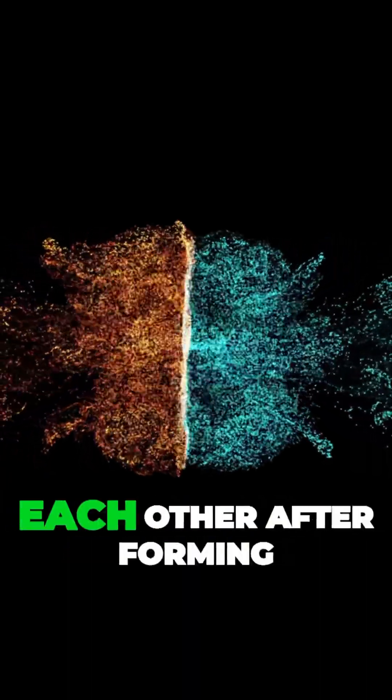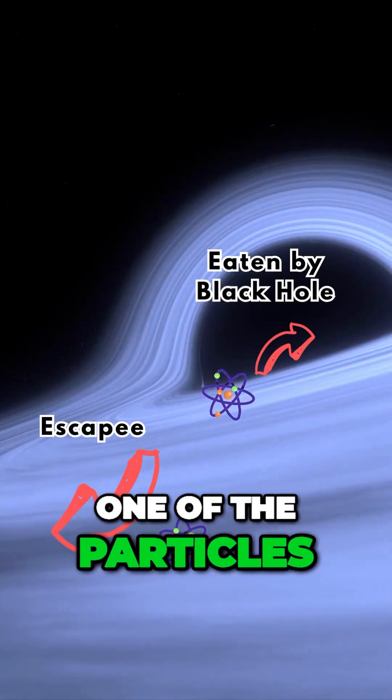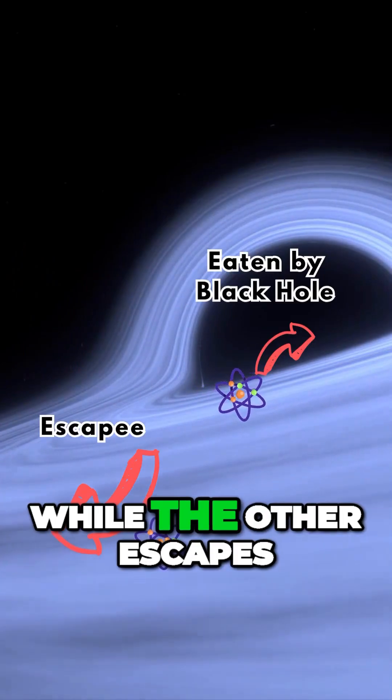Normally, these pairs annihilate each other after forming. However, near a black hole's event horizon, one of the particles could fall into the black hole, while the other escapes.